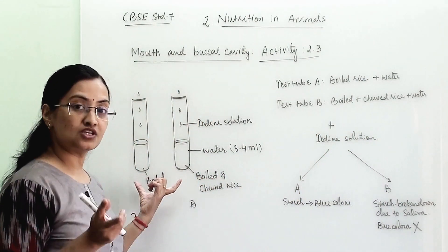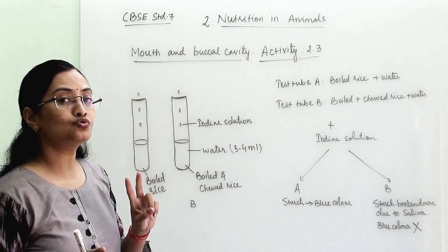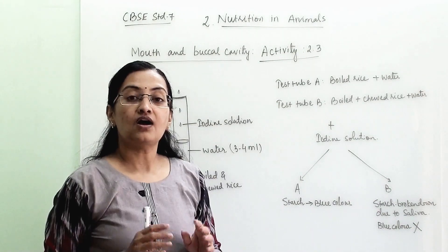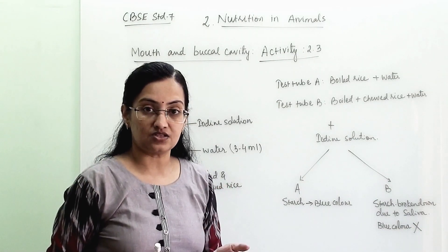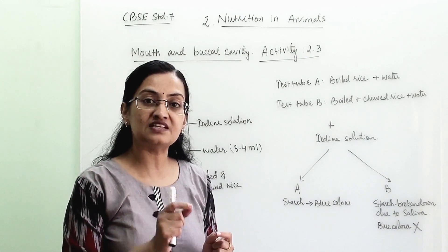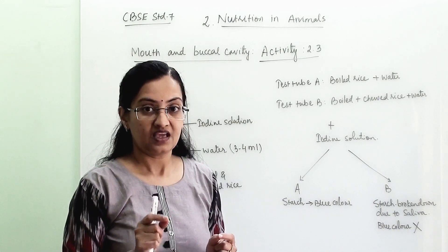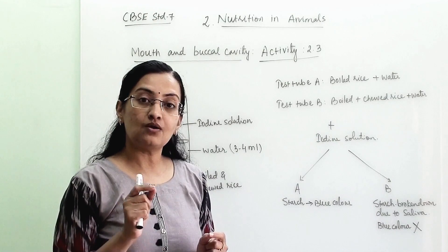Now after making these two test tubes ready, we are adding 2 to 3 drops of iodine. Now iodine is an indicator. Indicator will show a presence of one specific substance.